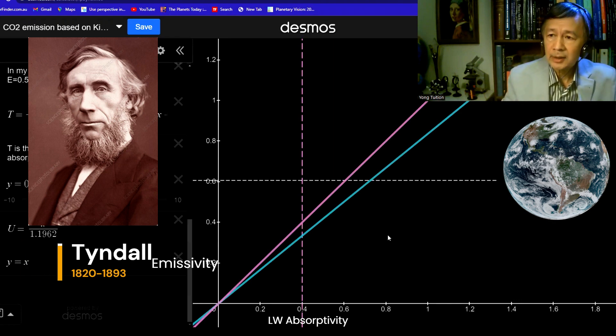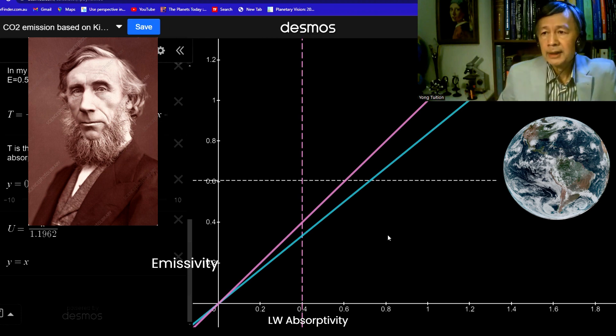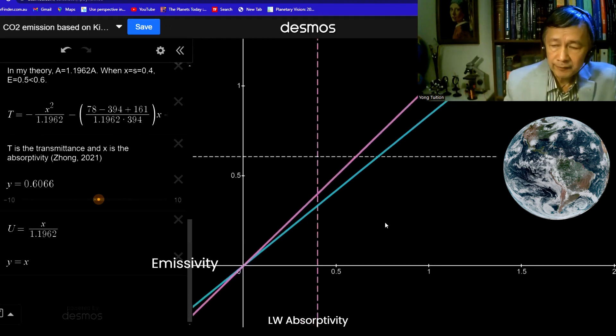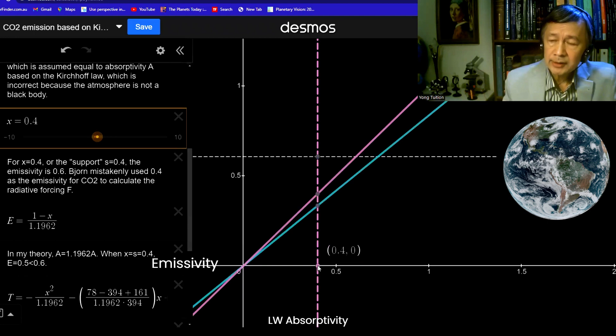But my modification of Kirchhoff's law simply specifies that it is proportional, but not necessarily equal in the case of the gaseous material, such as water vapor and CO2. So basically, for example, if the absorptivity is 40%, 0.4, which means 40%,